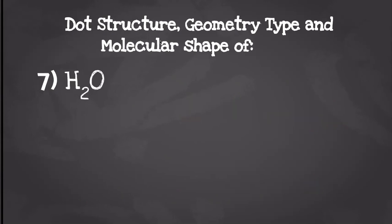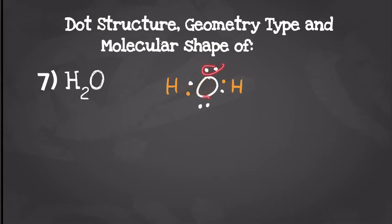Next up we have a water molecule. We're going to have one oxygen with six valence electrons and two hydrogens with one valence electron each, so our dot structure should look something like this. We're going to have one central molecule with two atoms attached to it and two lone pairs. That's going to give us a geometry type of AB2E2, which gives us a molecular shape of bent.